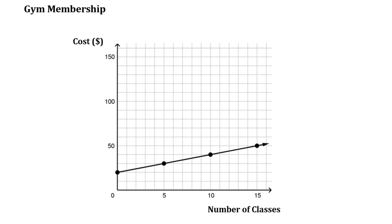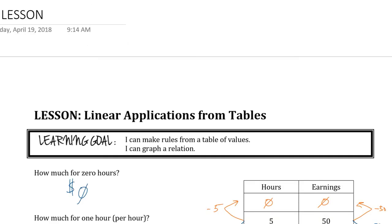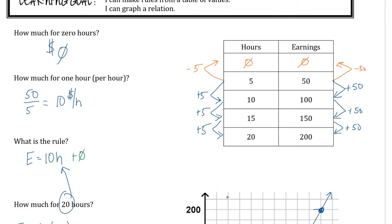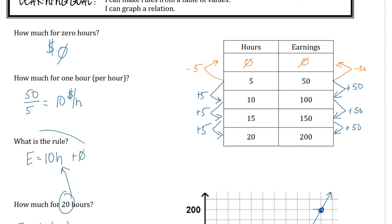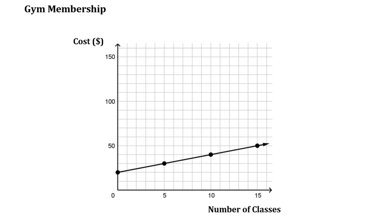Whether you're starting with a table, whether you're starting with the rule, or whether you are starting with a graph — no matter what I'm starting with, I have to be able to use what I'm given to find those two things. We looked at how you do that from a table. We are finding the change from the graph and using the change to find how much for zero, and then we take that and we know how to write the rule with that information. We need to know how to find it from a table and how to write it as a rule, because if I can write it as a rule, I can figure it out from the rule as well and go all the different directions.